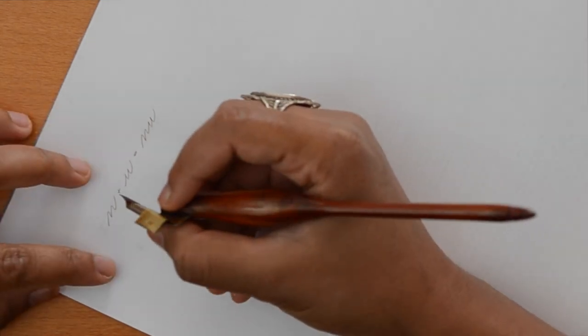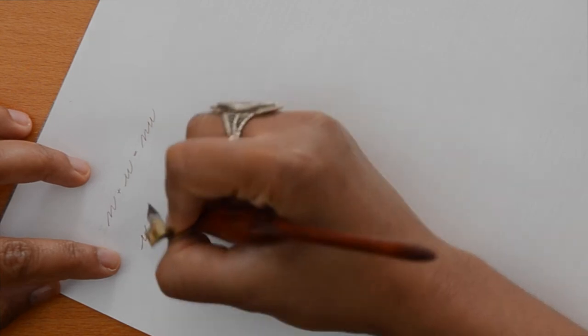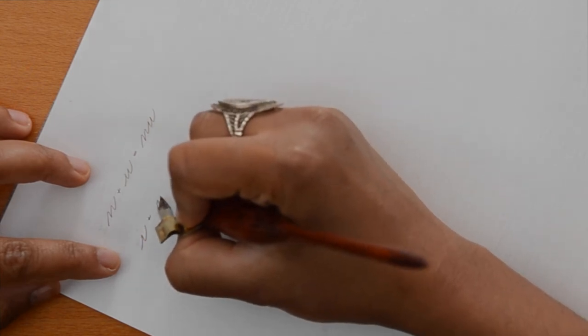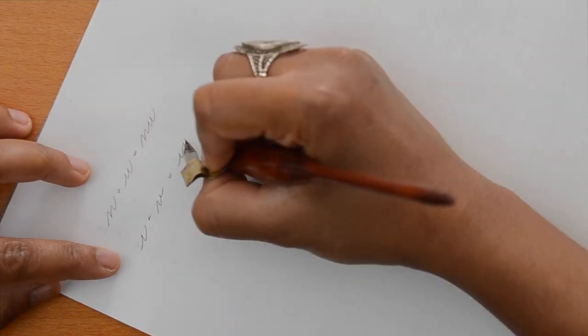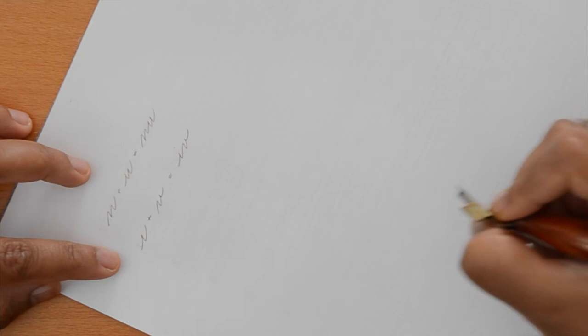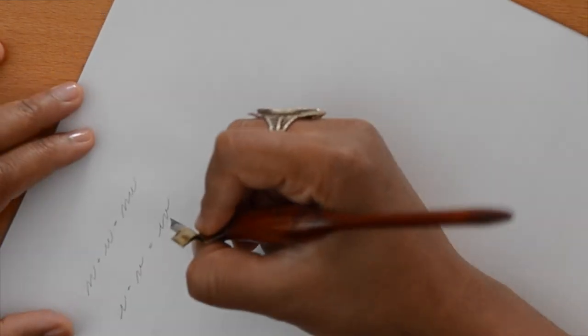How about if we have a different entry and exit stroke. So in this case of this I for example we have a right curve as the exit stroke but the V has a left curve as the entrance stroke. In this case we use a compound curve. That's something that kind of transitions between the right curve and the left curve.